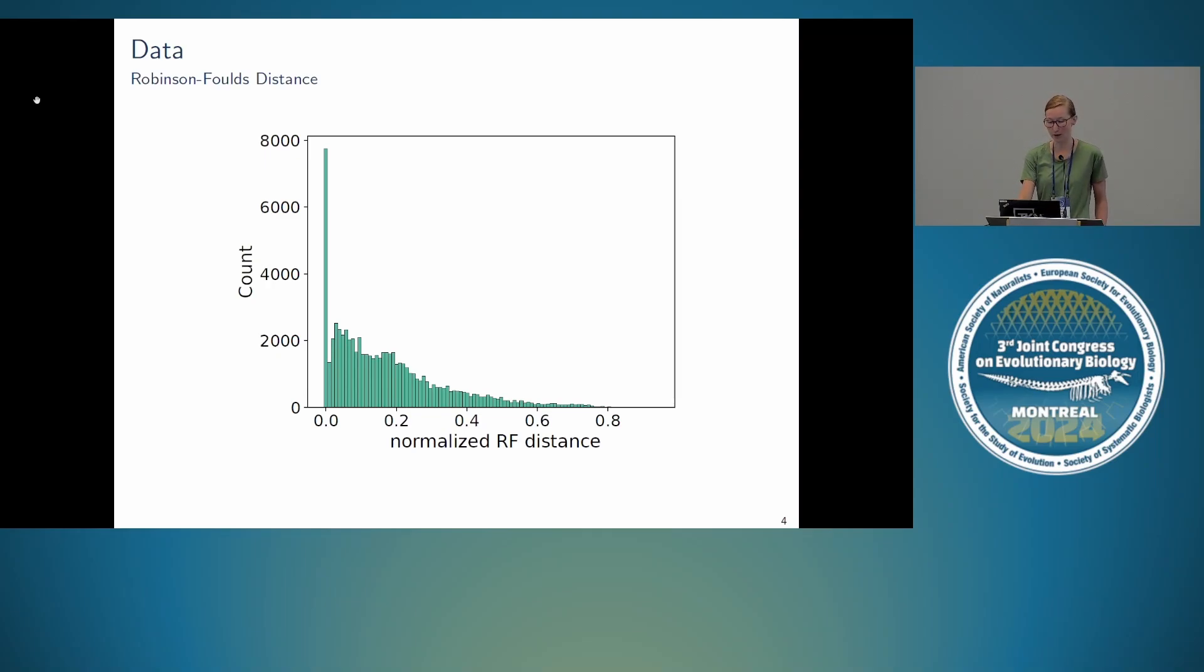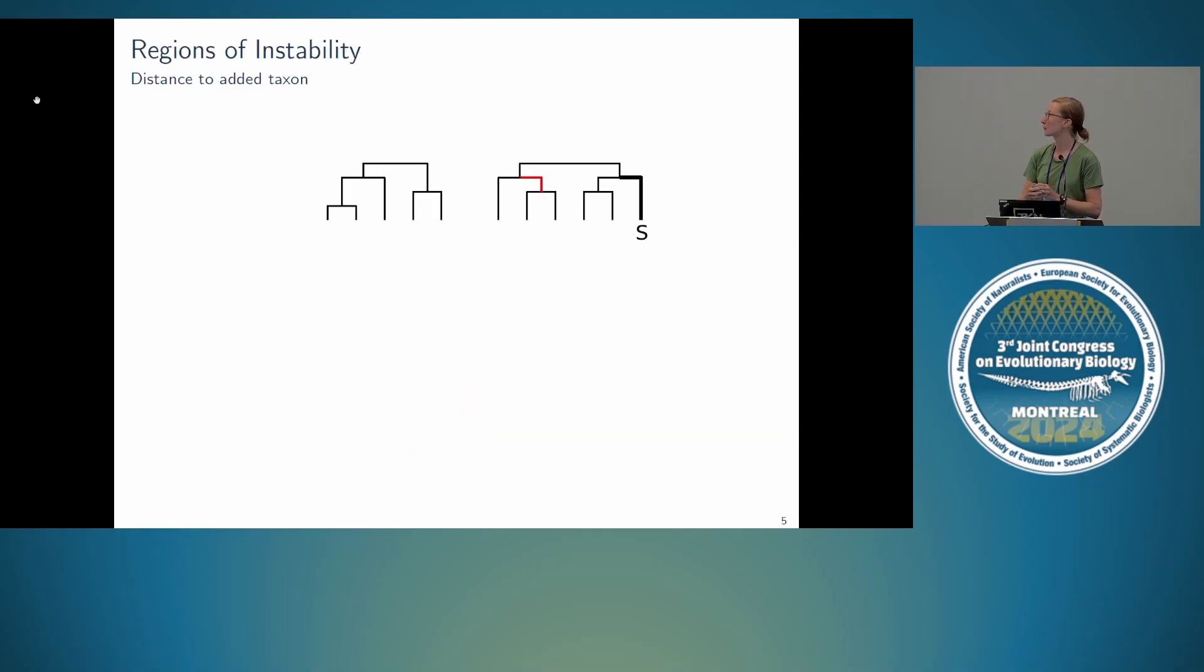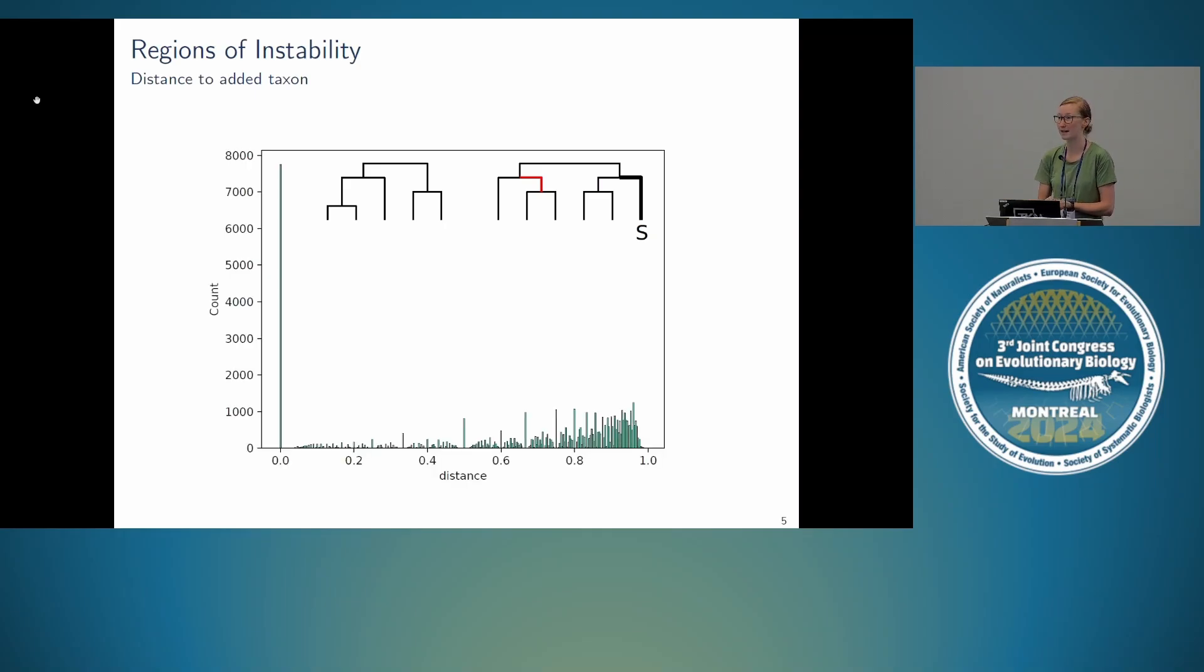We were then also interested in seeing where exactly our tree changes. So what we wanted to know is whether the changes in our two trees are local to where this new taxon sits in the tree. So if we assume that here on the left we have our inferred tree on the smaller alignment and on the right the tree on the full alignment that has this extra sequence S, we wanted to look at the edges that are different between the two trees, for example the red edge here, and see how close it is to this added taxon S. And the idea is that potentially it's close to where the taxon sits because that might be where the taxon has most influence. So we were actually quite surprised when we saw that these distances tend to be quite high. There's again a high bar at zero. Those are the trees that have no difference between them, so they're included in that. But generally we see that the changes between the two trees can actually be quite far away from where this new taxon sits in the tree, which was a bit of a surprise to us.